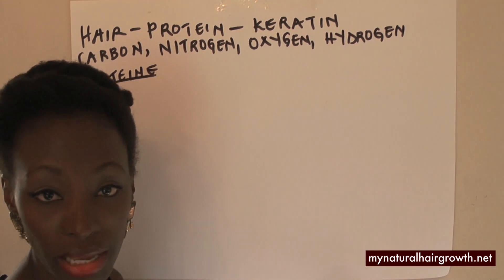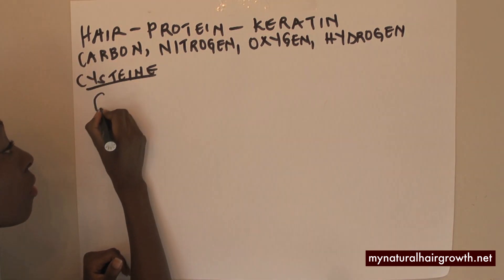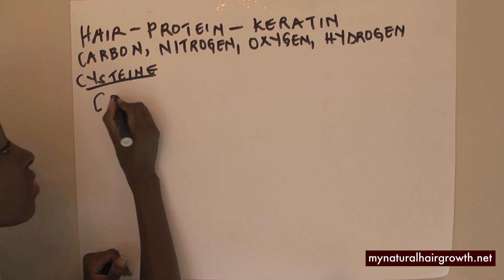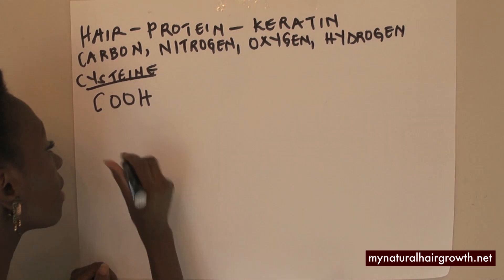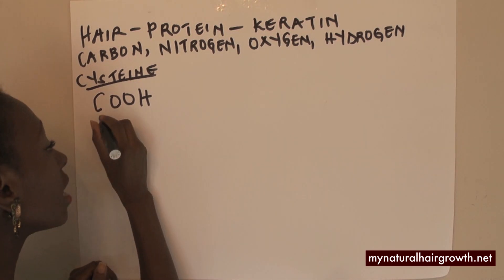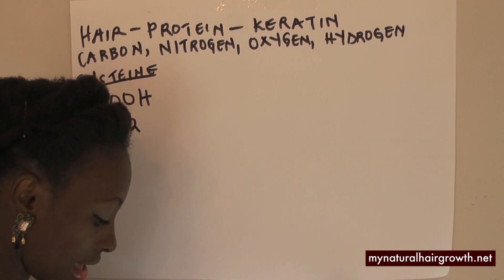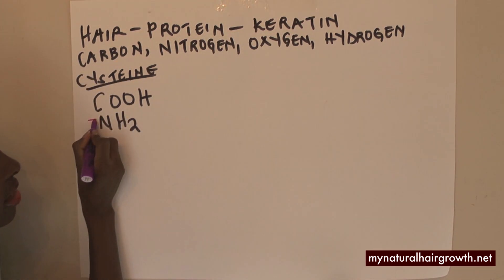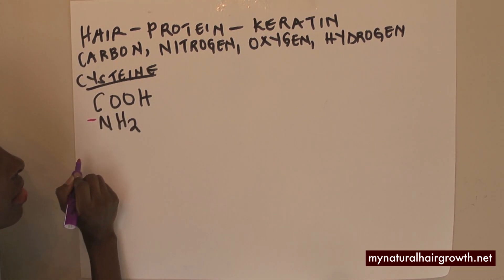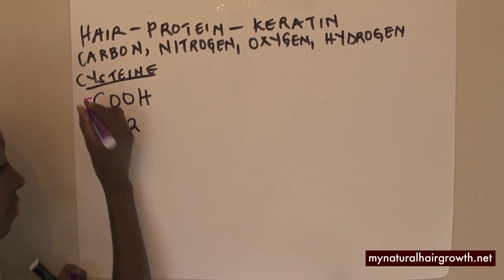So what does this all mean? How is your hair actually formed? Carbon combines with oxygen and hydrogen — that's the first part. The second part is nitrogen combines with two hydrogen molecules. This is positively charged, and this is negatively charged.